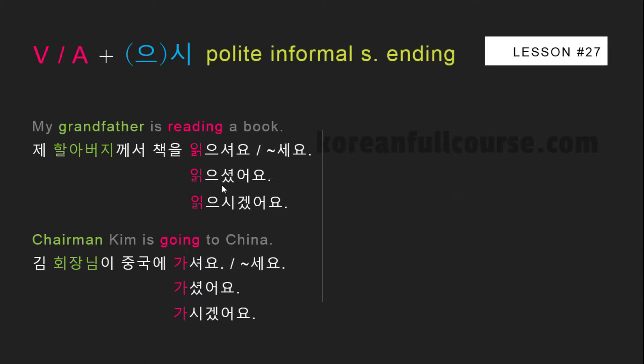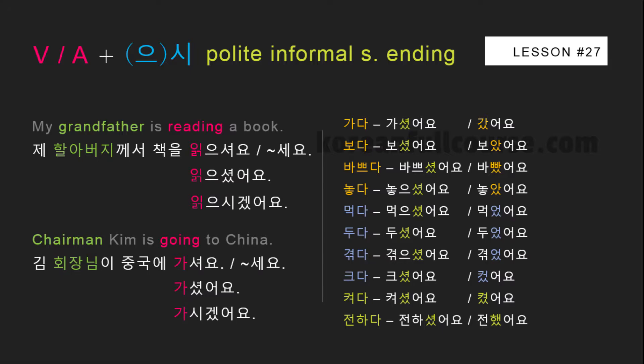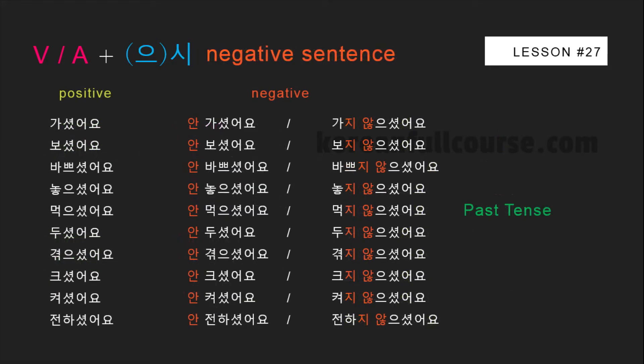I hope you now clearly understand the difference between the honorific particle 으시 and the polite formal sentence endings 니다 and 습니다. Let's take a look at how you can use this honorific particle with polite informal sentence endings. It's easy because here you also need to use just one past tense suffix for all types of verbs and adjectives. You can pause the video and try to figure out how all this works.